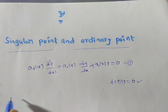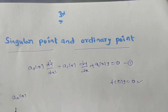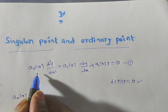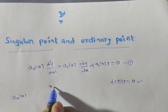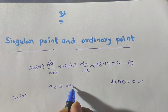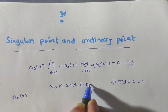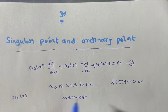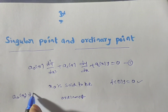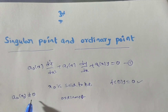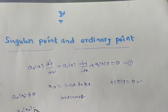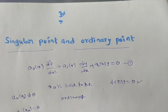Here, a₀(x) is the coefficient of y double dash. A point x₀ is said to be an ordinary point if a₀(x₀) is not equal to 0. Then you can say this point is called an ordinary point. If a₀(x₀) is equal to 0, then you can say this is called a singular point.